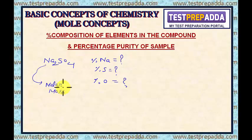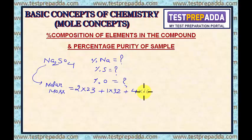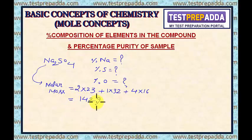Molar mass will be 2 × 23 — 23 is the atomic mass of sodium — plus 1 × 32 — 32 is the atomic mass of sulfur — plus 4 × 16 — 16 is the atomic mass of oxygen. This value comes as 142.